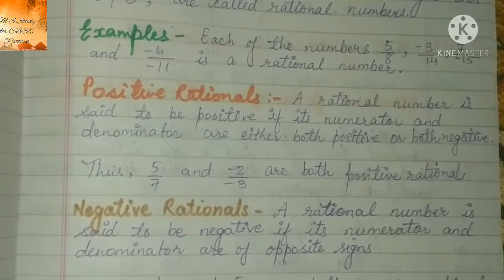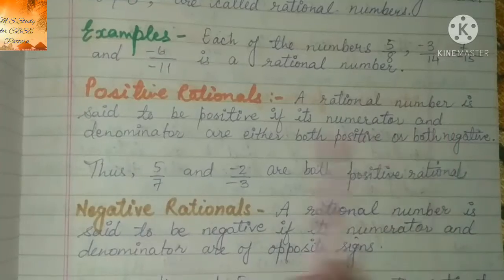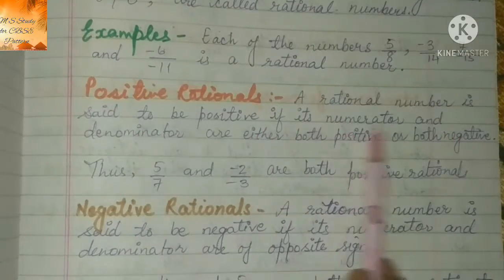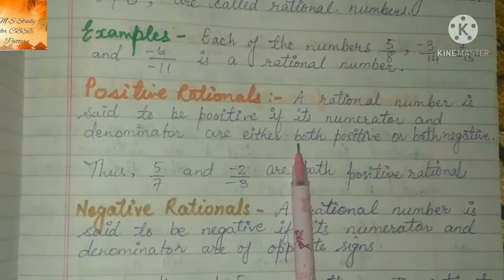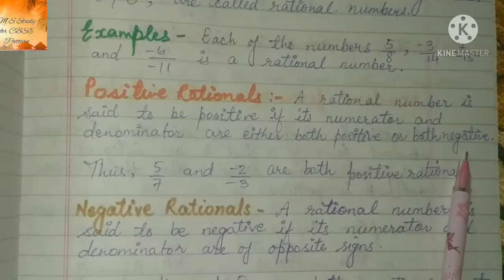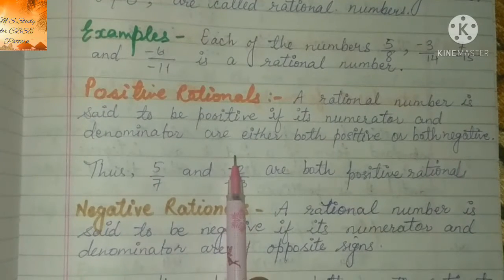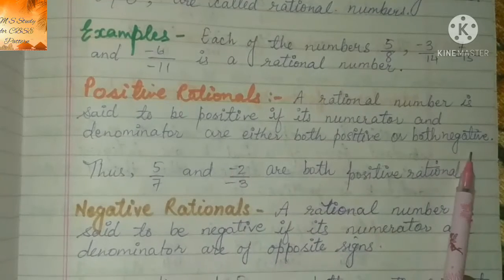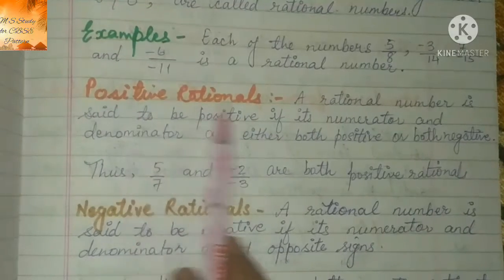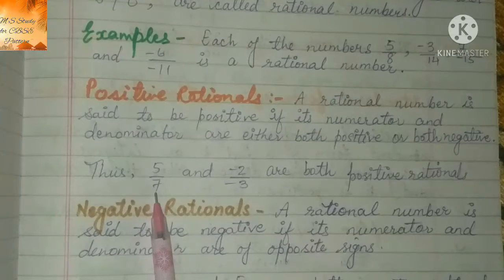उसके बाद हम positive rational numbers के बारे में पढ़ेंगे. तो positive rational numbers कौन से होते हैं? A rational number is said to be positive if its numerator and denominator are either both positive or both negative. यानि कि वो rational numbers जिनके दोनों ही numerator और denominator same sign के साथ हों — या तो दोनों ही positive हों, या तो दोनों ही negative हों — उन्हें हम positive rational numbers बोलेंगे. जैसे कि 5 by 7 — दोनों ही positive हैं, तो positive rational number हो गया.